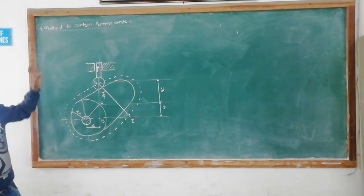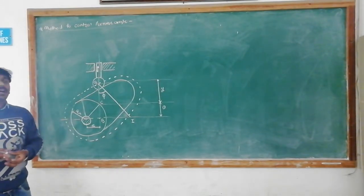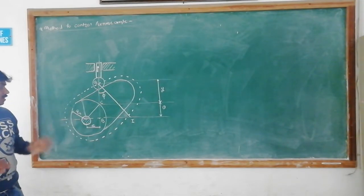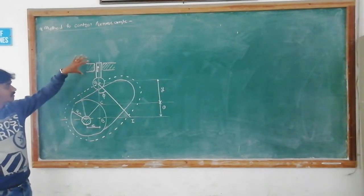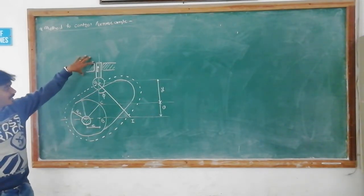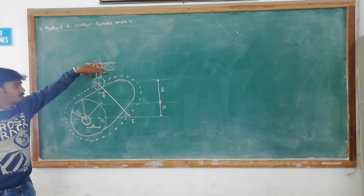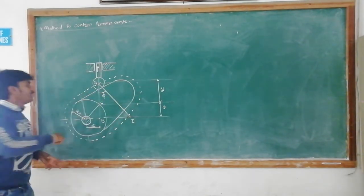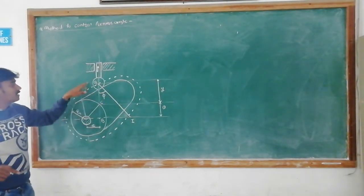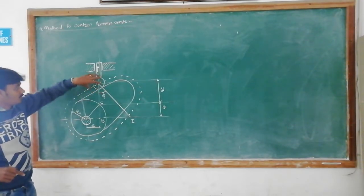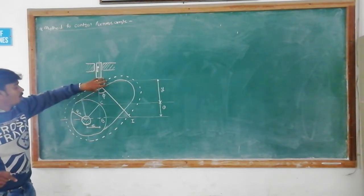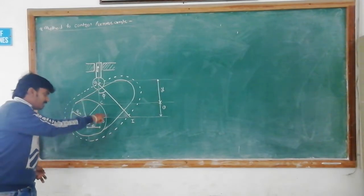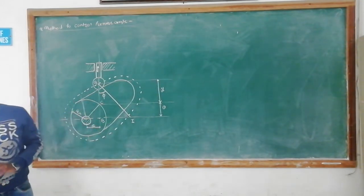Now the method to control the pressure angle — how we can control it. See here in this diagram. This is the follower. This is the cam profile, and this circle is the base circle for the cam.